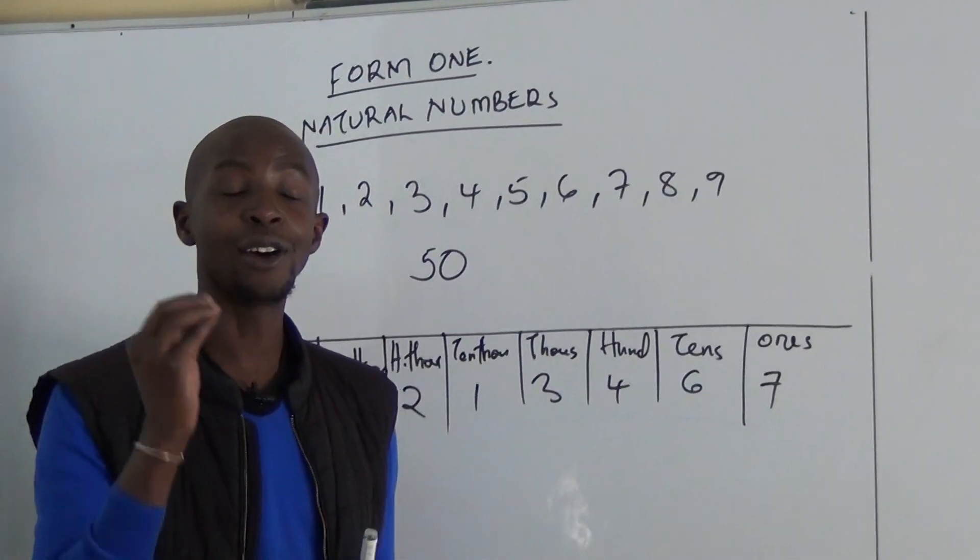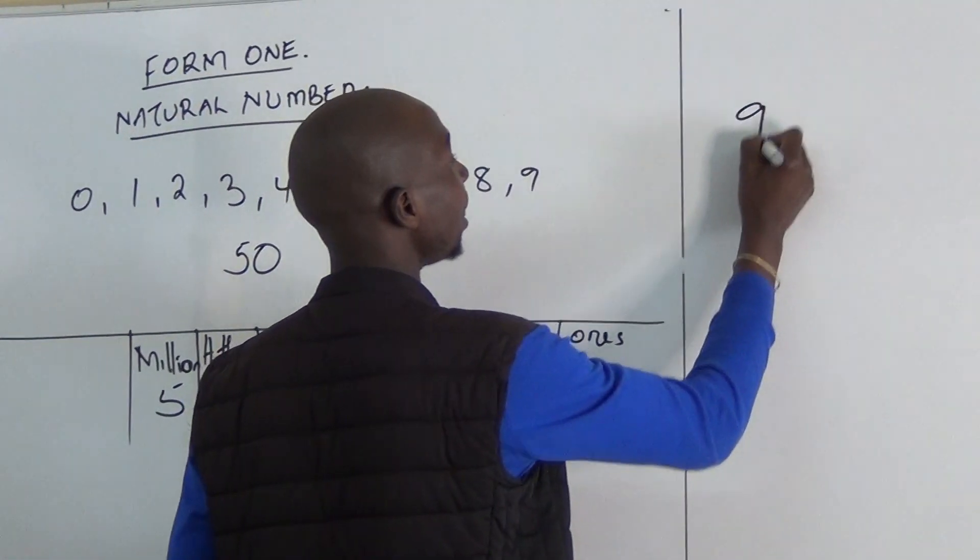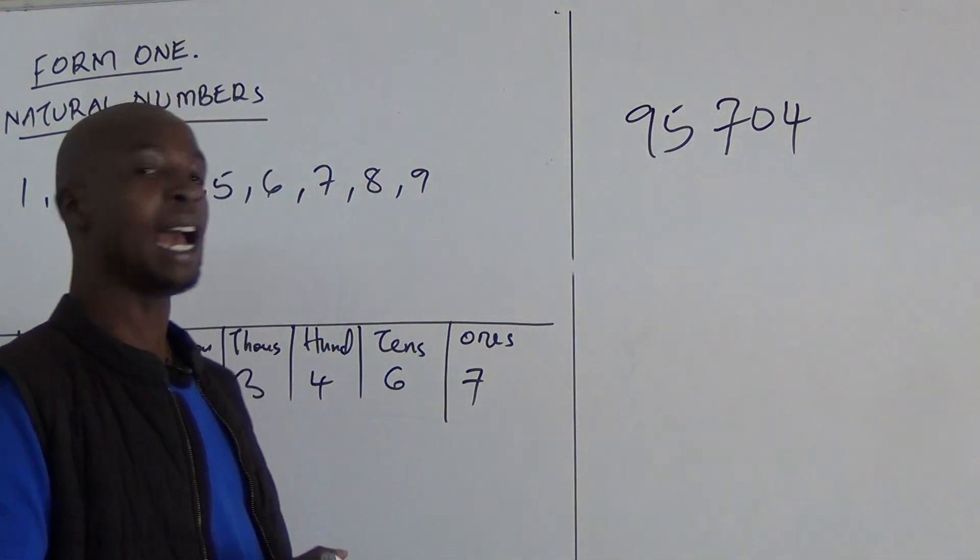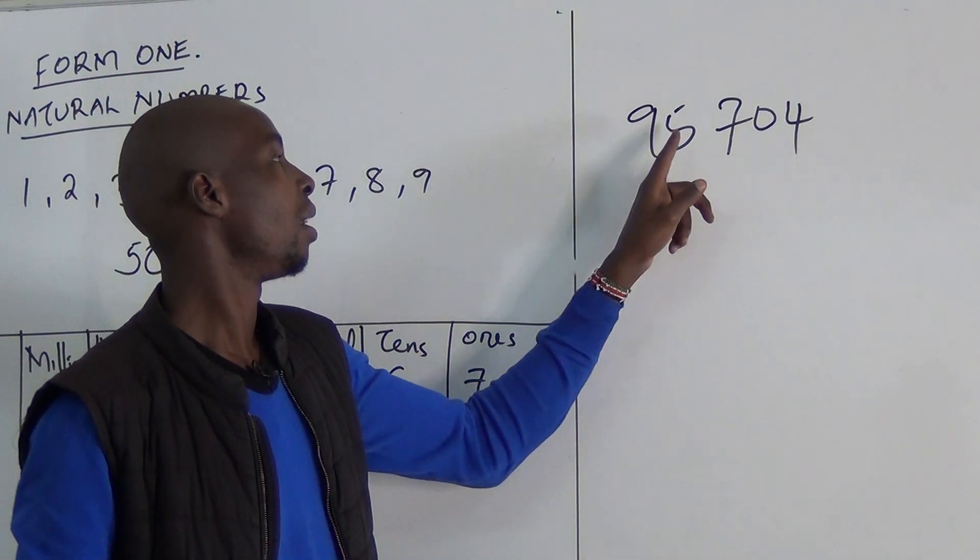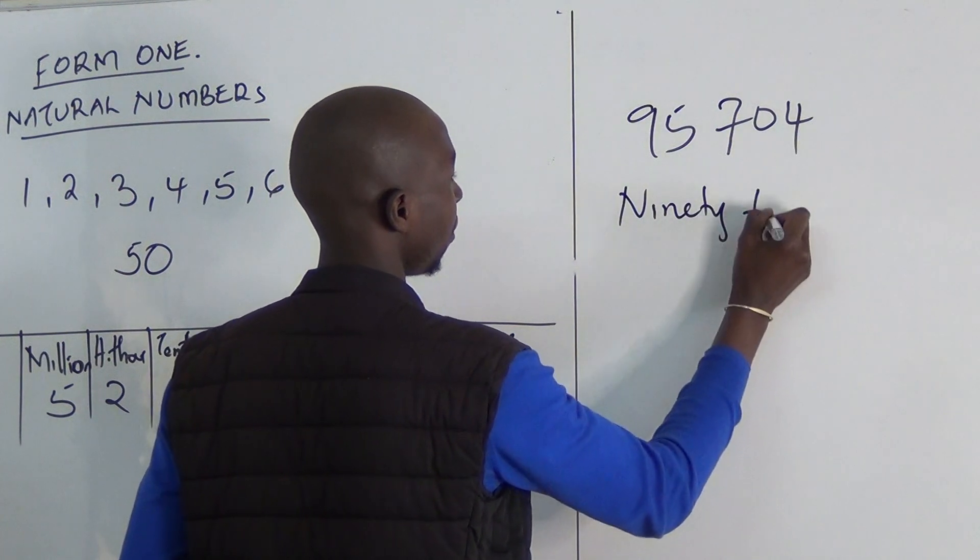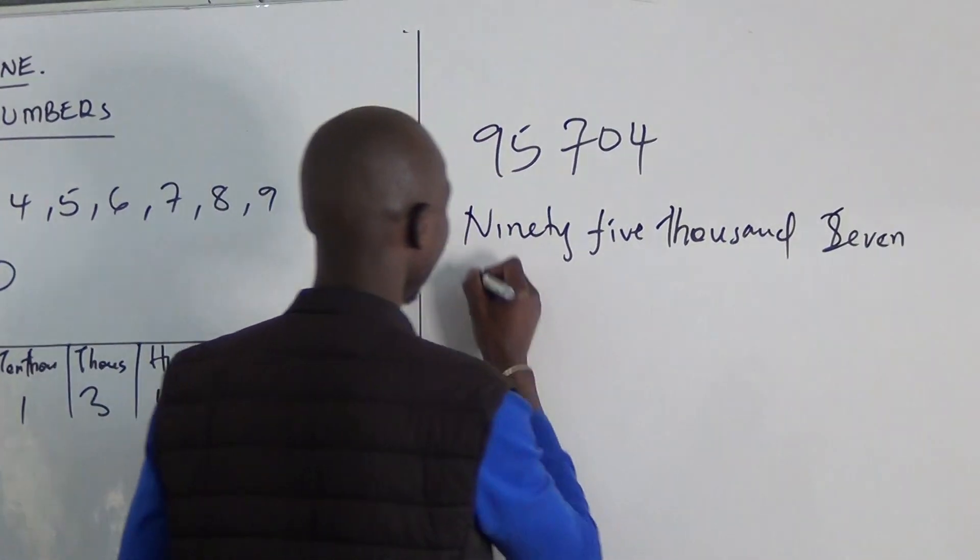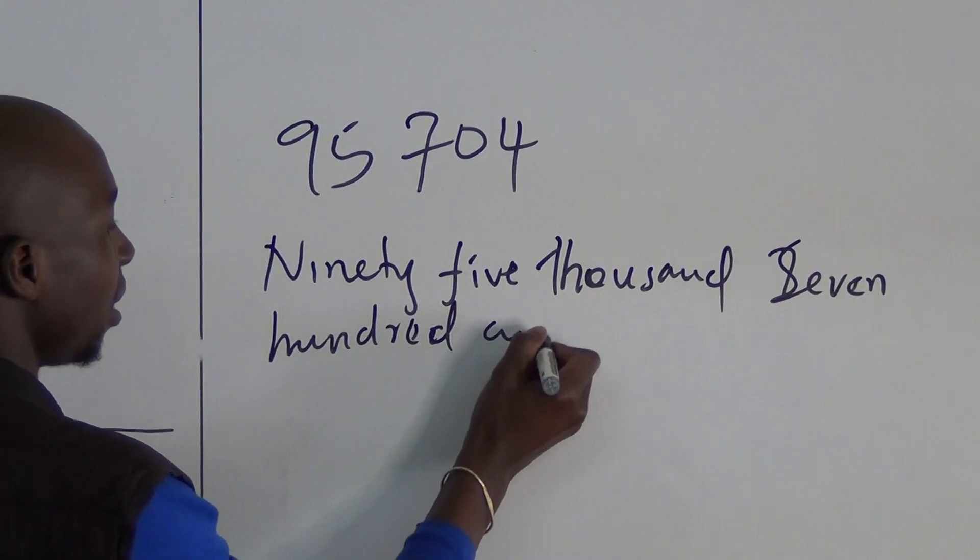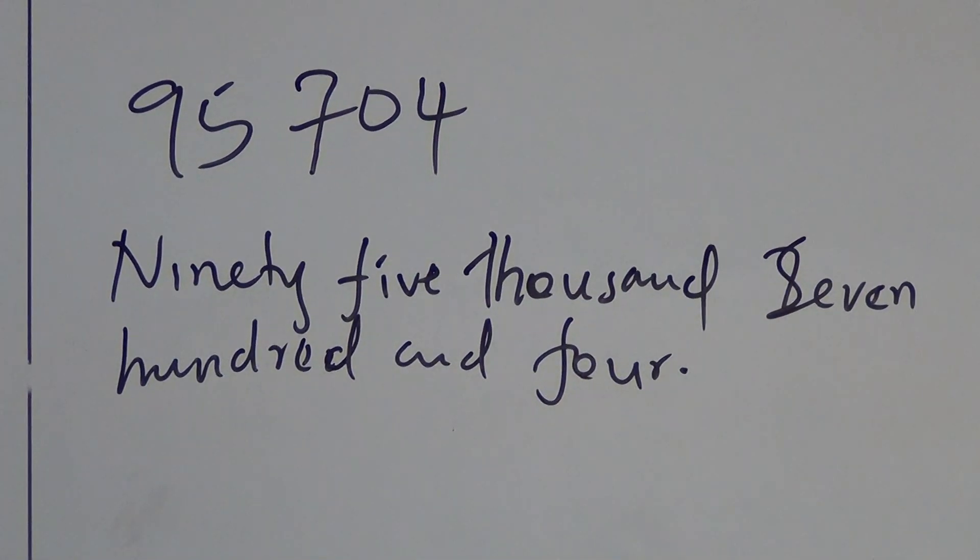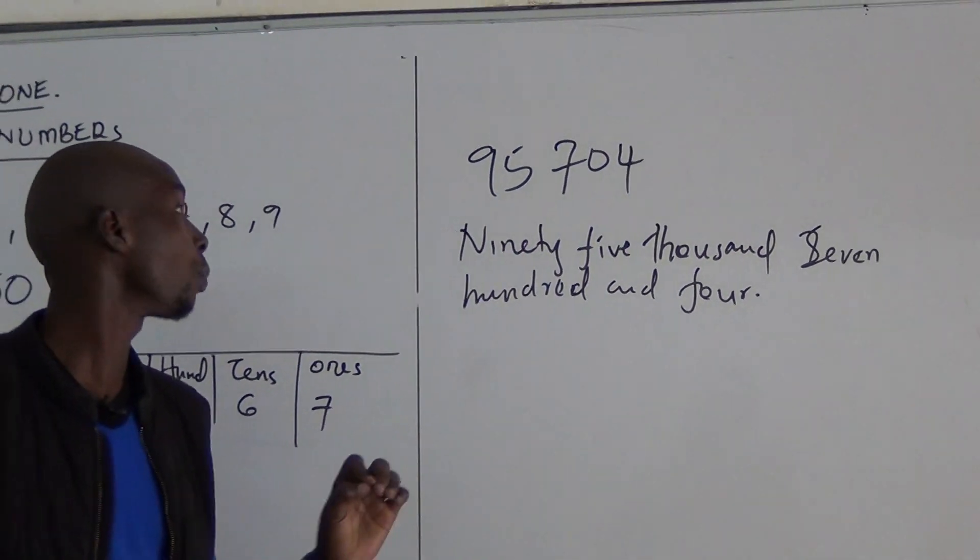And that brings us to reading numbers in words. So it is important to know how to read numbers and how to write them when you are told in words. For example I have a number like 95704. How will you read this number? It is read as ninety-five thousand seven hundred and four. Now many times you will either be told to write in words or write in figures. This one was given in figures and you are told to write in words.